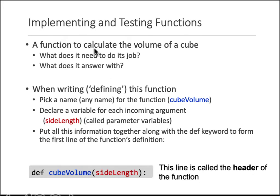Let's say we need to write a function to calculate the volume of a cube. The first thing is: what does the function need to do its job, and what does the function return from that black box? When you want to write a function, you have to pick a name — in this case we choose a name called cube_volume.